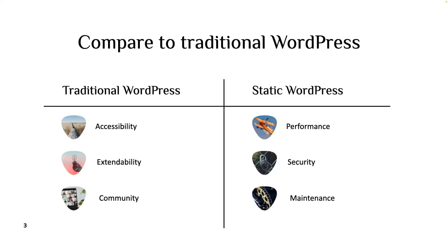Let's quickly compare traditional WordPress with static WordPress. WordPress is super accessible, extendable, and has a huge community. All these benefits are what made WordPress popular, powering 40% of the entire internet. We don't want to remove these benefits with a static WordPress website. What we are doing instead is taking all the benefits of WordPress but solving the most common problems you face — which means performance, security, and maintenance. These are the main pain points when running a WordPress website and often the reason why people switch to more modern content management systems.